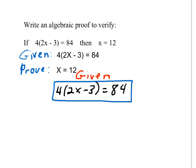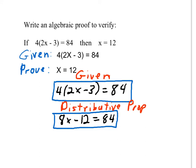The first thing you would do to solve this algebraic problem would be to use the distributive property. So I am going to distribute the 4 across the 2x and the 3. And I will get 8x minus 12 equals 84. I will box that statement off. And the reason I can go from the first statement to the second statement is because I applied the distributive property.